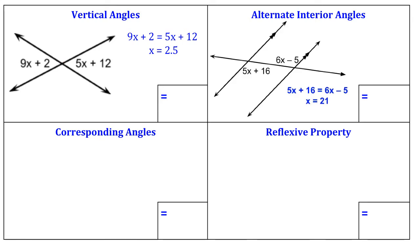Alternate interior angles mean that you have angles that are on alternating sides of a transversal. So a transversal would be like this side right here, and that they would both be in between or interior to your parallel lines. So in this example they're both in between these two parallel lines.